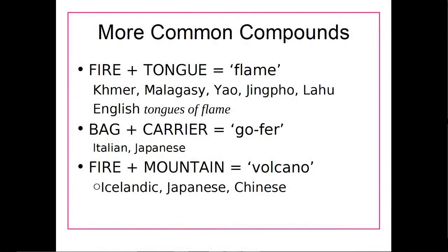A few more common cross-linguistic compounds: 'fire' plus 'tongue' means a flame — we kind of do this in English as well. 'Bag' plus 'carrier' means something like a gopher or someone who runs errands for you. And 'fire' plus 'mountain' in many languages means 'volcano.' These are just a few of those really common compound words we see across many languages.